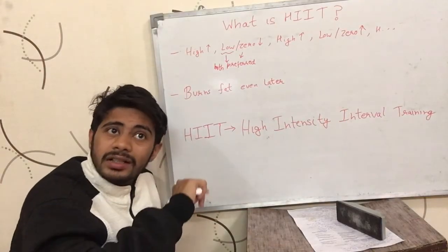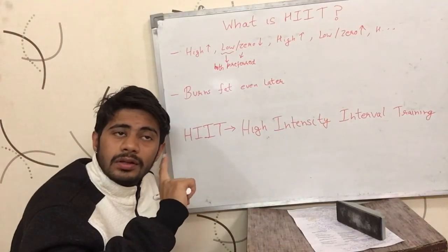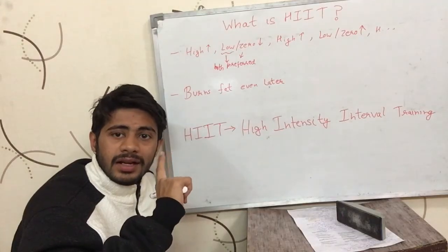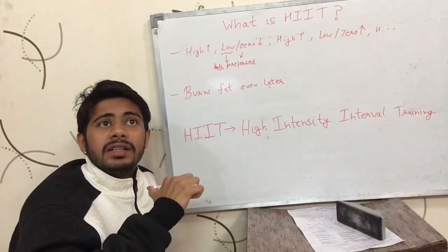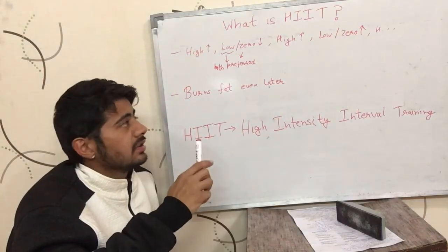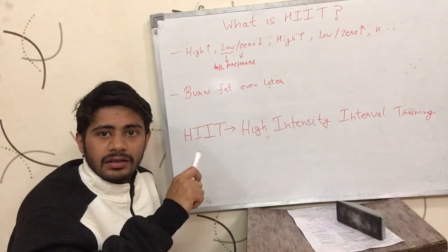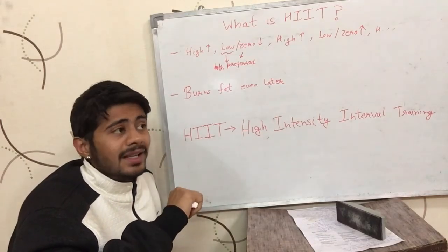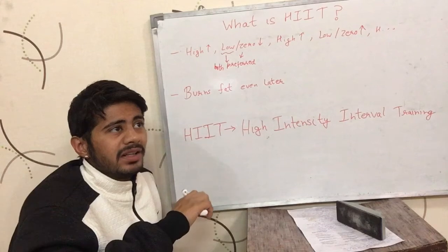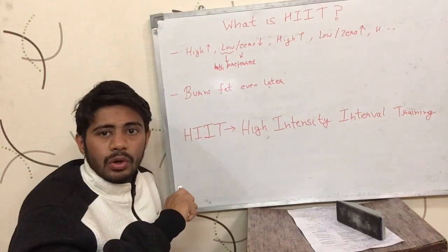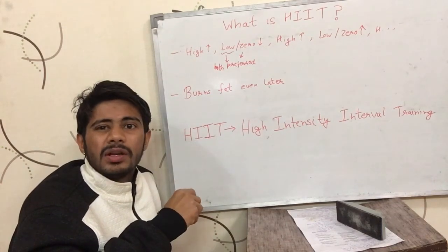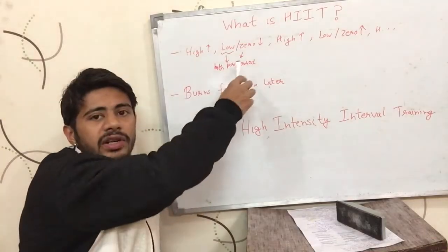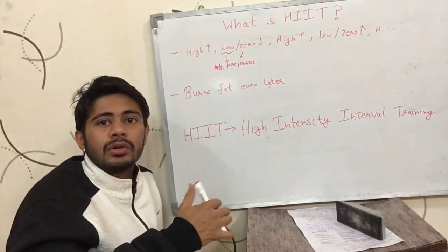If you think that you ran for one minute at high intensity, you should not then take rest for 10 minutes before running again at maximum speed. The rest period should not be too long — usually it is 1, 1.5, or 2 minutes. The low intensity periods should not be too long.